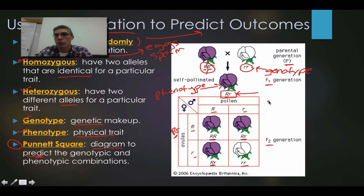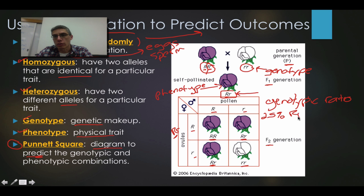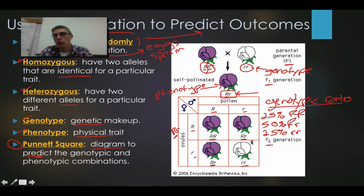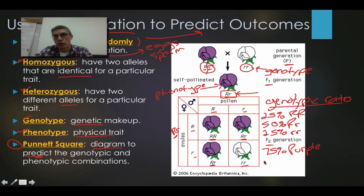We basically have a 75% chance of getting a purple flower, and a 25% chance that the recessive trait will come back out, which in this case would be white flowers. Something we're also going to look at is the genotypic ratio. There is a 25% chance of big R, big R; a 50% chance of big R, little r; and a 25% chance of lowercase r, lowercase r — which adds up to 100%. That is the genotypic ratio. For the phenotypic ratio, we have a 75% chance that it's going to be purple and a 25% chance that it's going to be white.